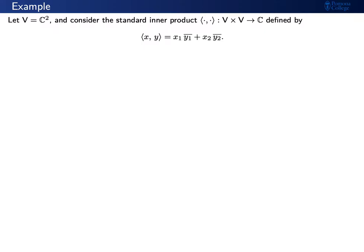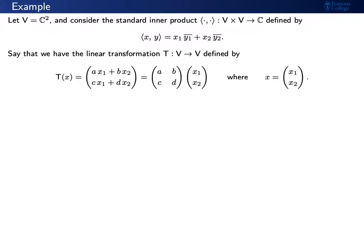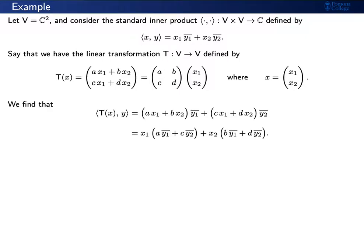Let's give an example. Say that v is C2, and let's consider the standard inner product defined as you see here on your screen. Let's consider a linear transformation t from v to v defined as multiplication by some 2 by 2 matrix a, b, c, d. Now we can consider the inner product of Tx and y. We can move around the parentheses so that instead of writing everything as something times y1 conjugate plus something times y2 conjugate, we express this as x1 times something plus x2 times something. The idea is that we've pulled out x1 and x2, and we have some terms left over. This will help to motivate where the adjoint is coming from.